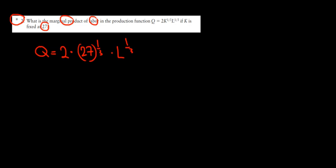Well, what is 27 to the power of 1 over 3? That is the same as 3 root of 27 multiplied with l to the power of 1 over 3. 3 root of 27, what number gives us such that we multiply 3 times and we get to 27? Well, that would be 3.